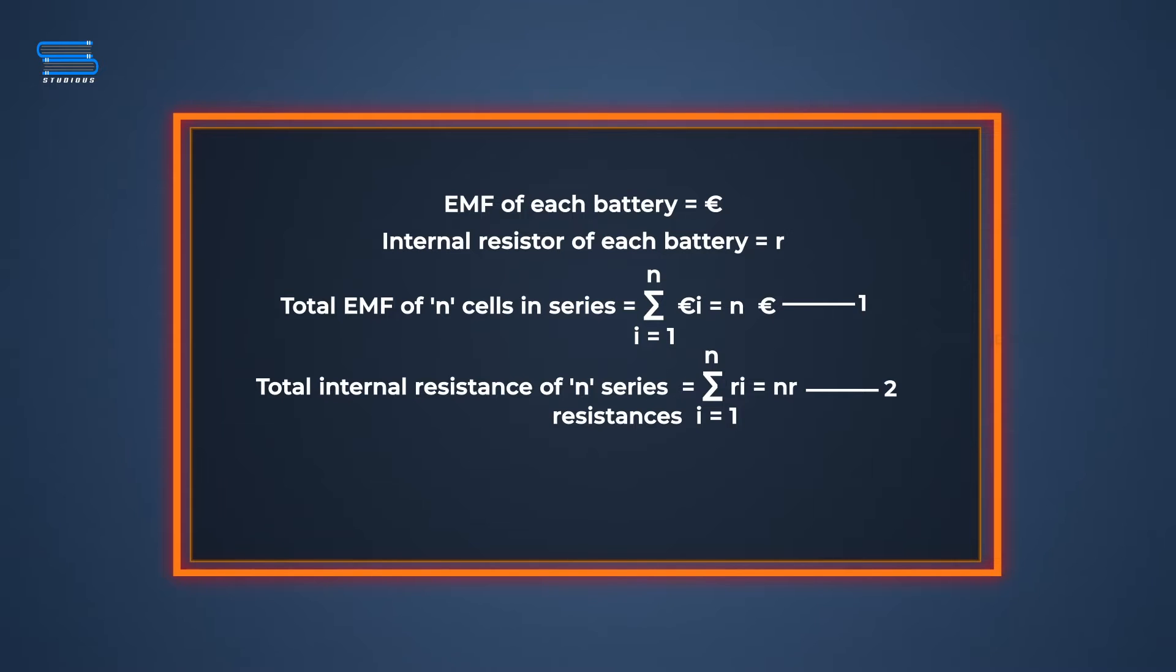Therefore, the total EMF of n cells in series will be equal to the sum of n EMFs, which is equal to n epsilon. Consider this as equation 1.